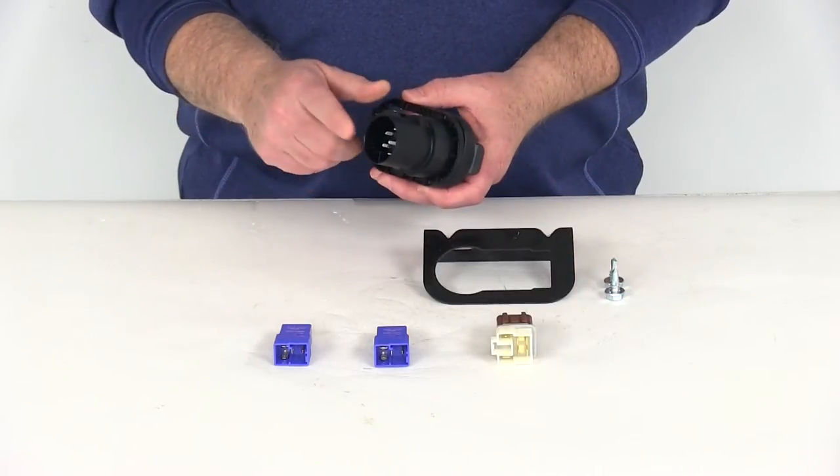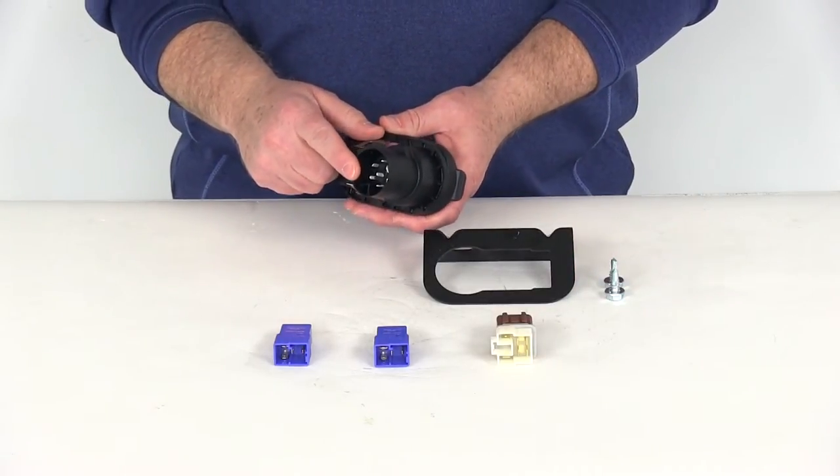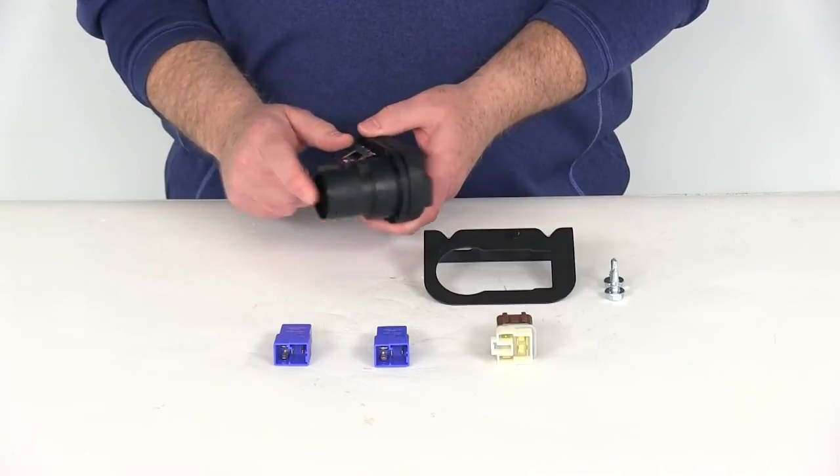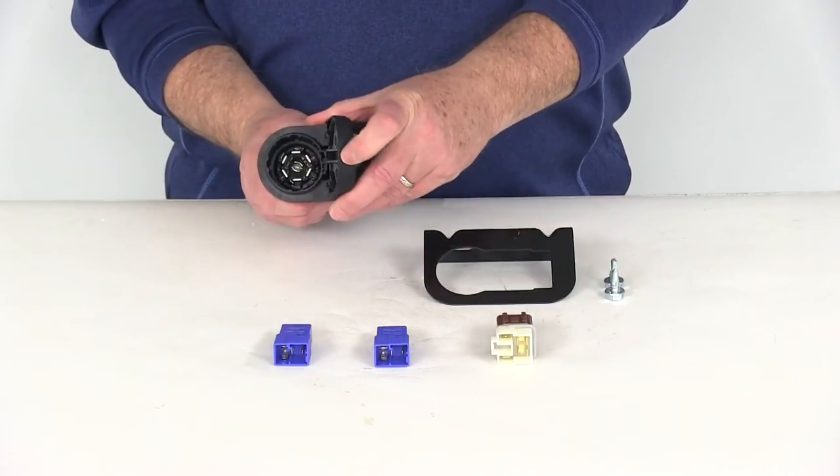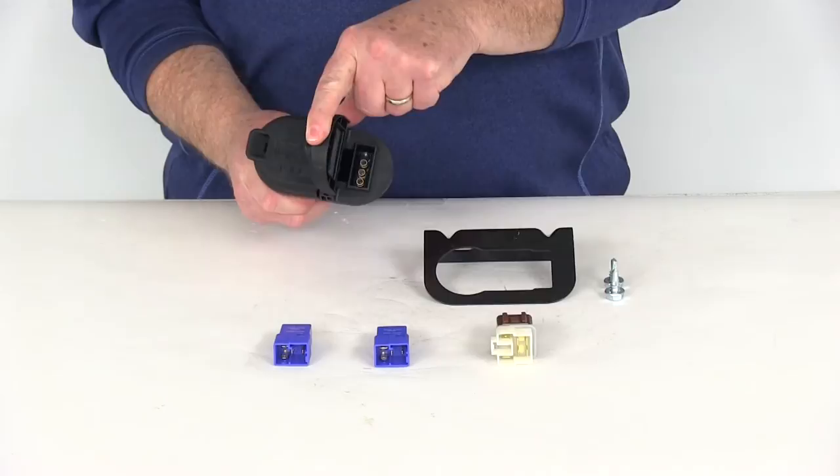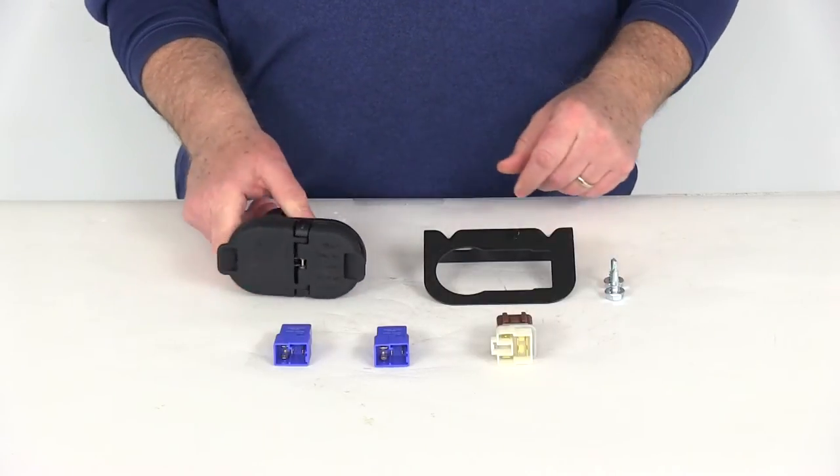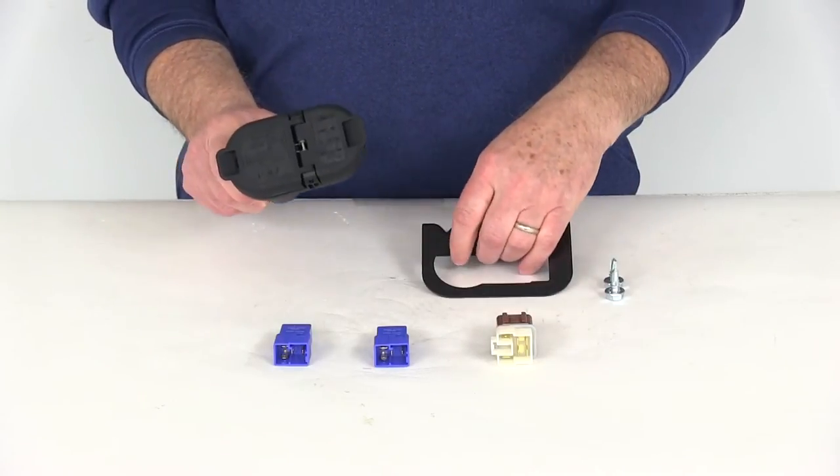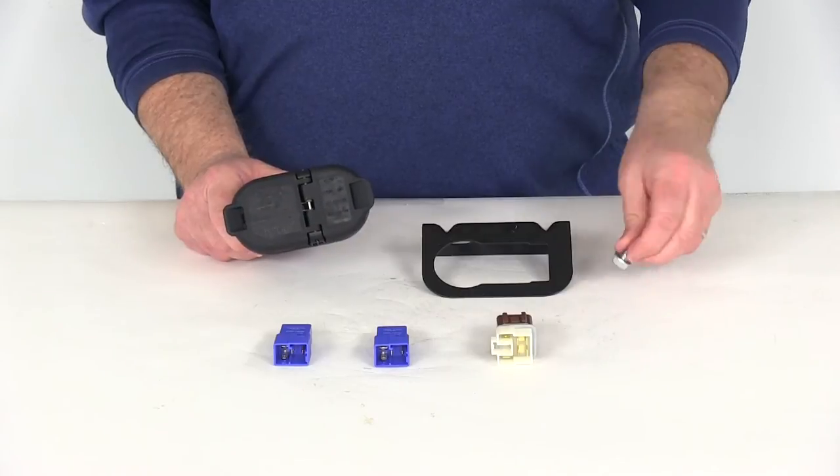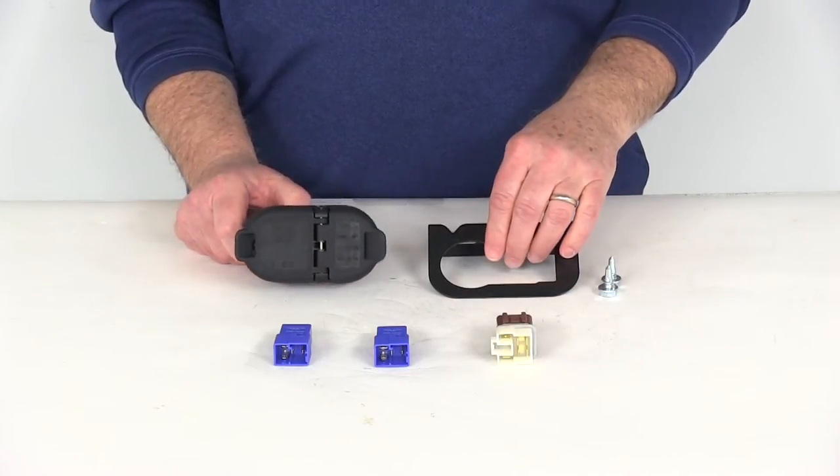This will plug into the vehicle's factory plug which is usually located behind the bumper and will provide a 7-way and a 4-way trailer connector hookup. It also includes the mounting bracket for this plug and a couple of screws to install the mounting bracket to your vehicle.